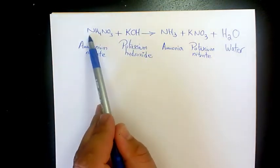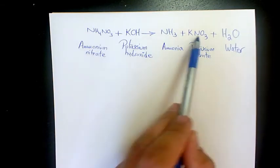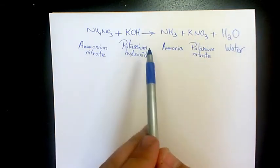For nitrogen, we have two nitrogen atoms, and here we have one and two, so nitrogen is balanced as well.